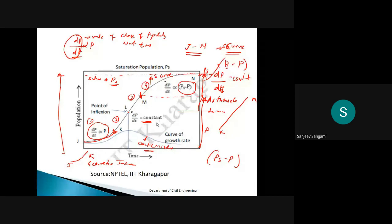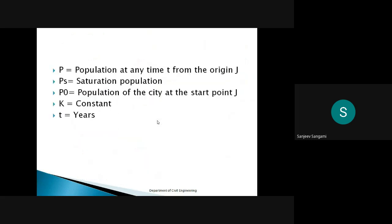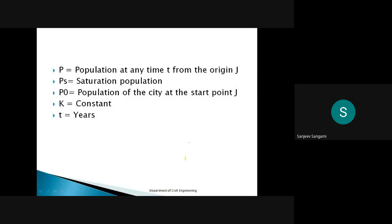Welcome to GCE Connect. In the previous class we were discussing the logistic curve method, the S-curve. We discussed the arithmetic increase method where dP/dt equals a constant, the geometric increase method where dP/dt is directly proportional to P, and the saturation population. Now, what formulas are we going to use when solving problems using the logistic curve method?